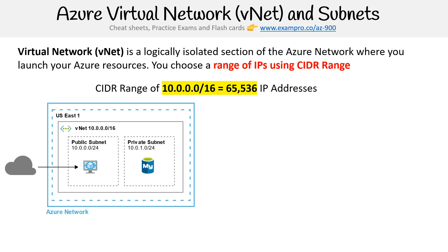Now let's take a look at the CIDR range. A CIDR range is just an allocation of IP addresses that you're going to use in your virtual network. Where it says 10.0.0.0, that's the name of our network, and the /16 is the CIDR range. The lower the number, the more IP addresses you get — I'm not going to get into the math, but /16 is a very big number. We could essentially launch 65,000 servers within this virtual network.